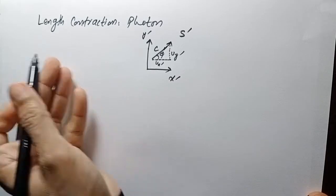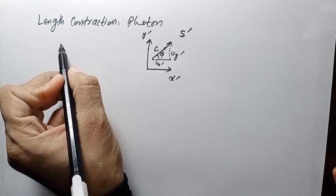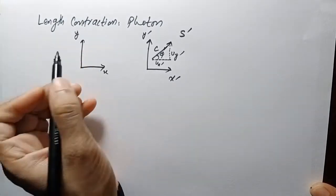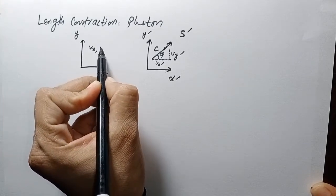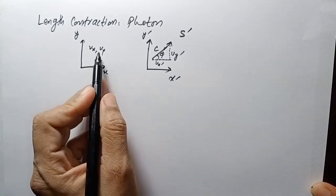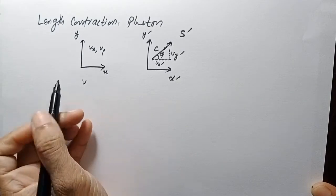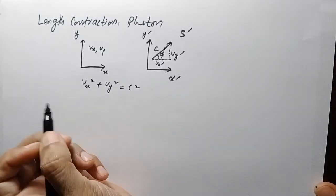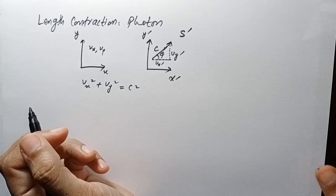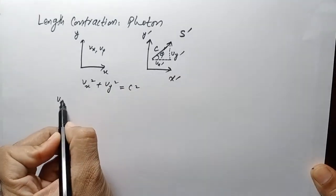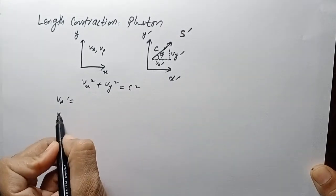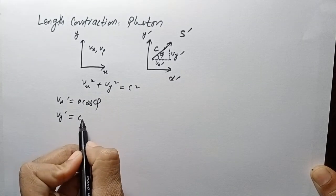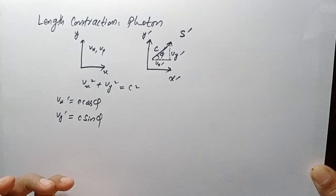We need to prove that in the rest frame of reference, the velocity components vx and vy satisfy vx-squared plus vy-squared equals c-squared. The velocity components in the s-prime frame are: vx-prime equals c times cosine of phi, and vy-prime equals c times sine of phi.